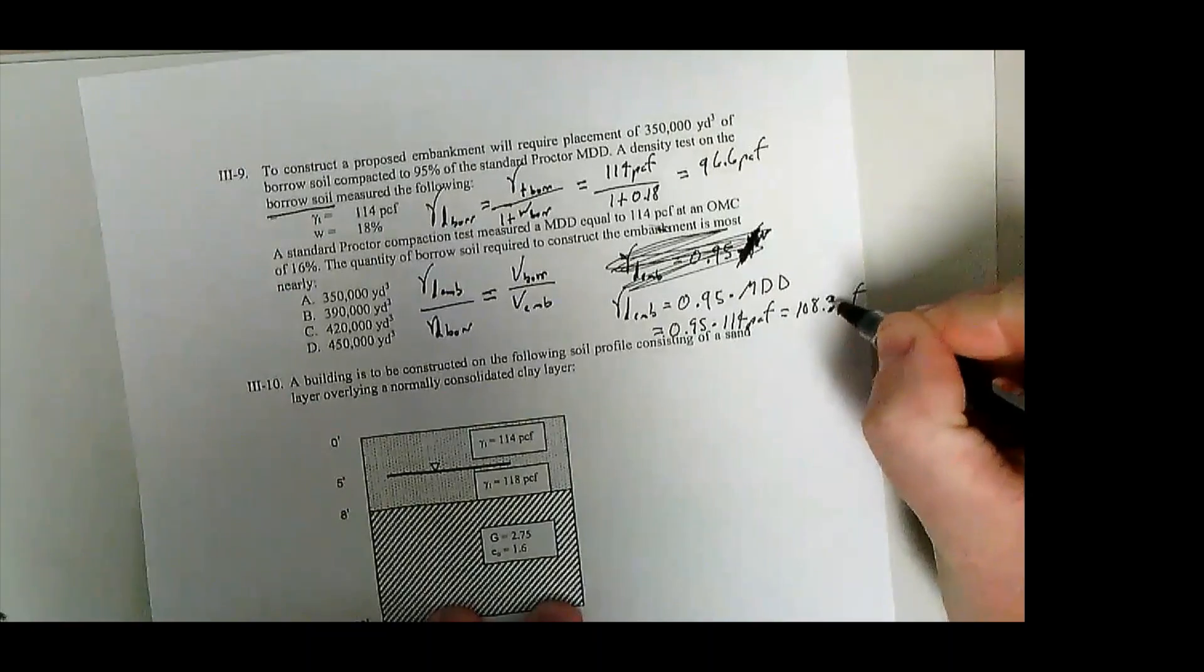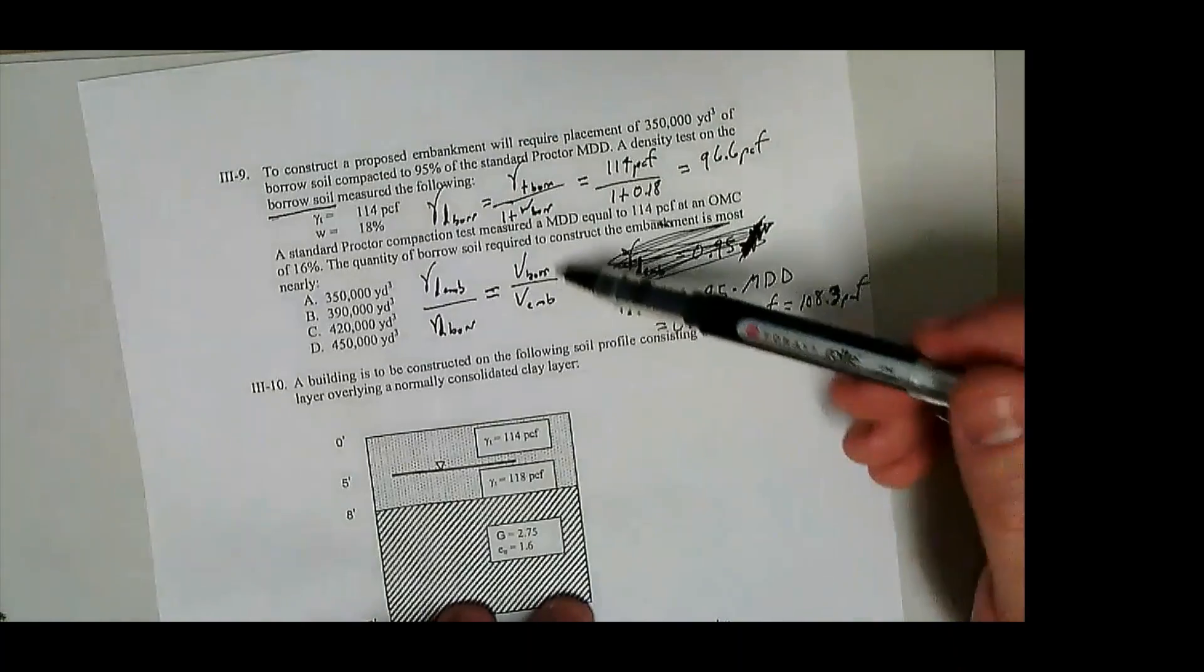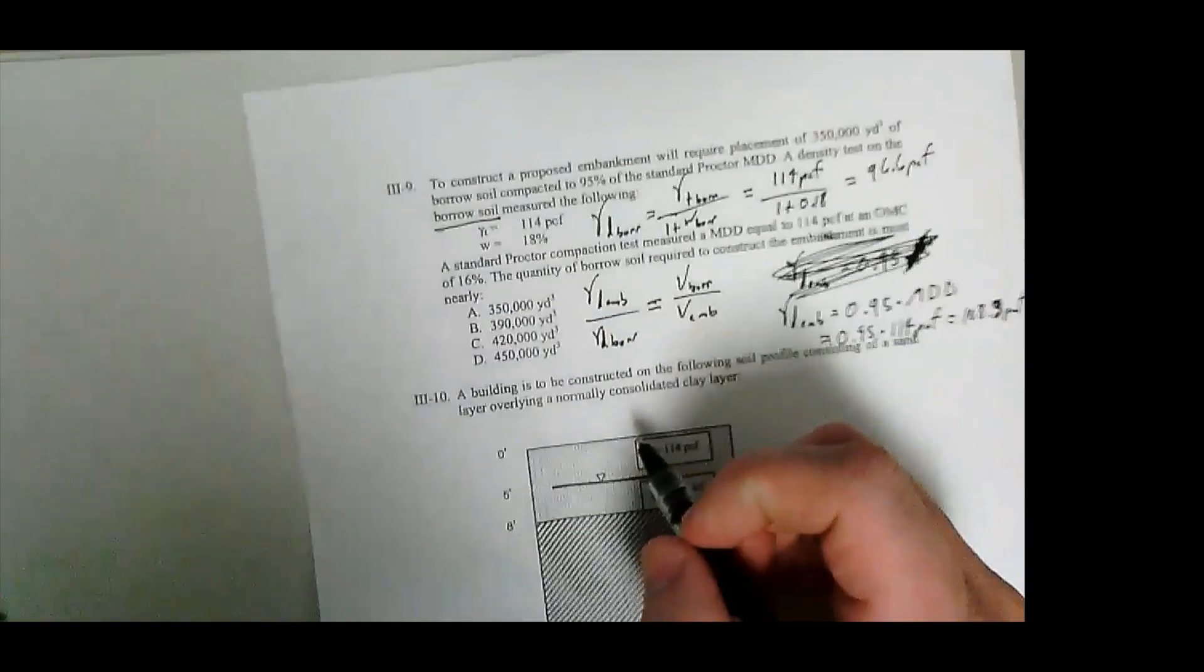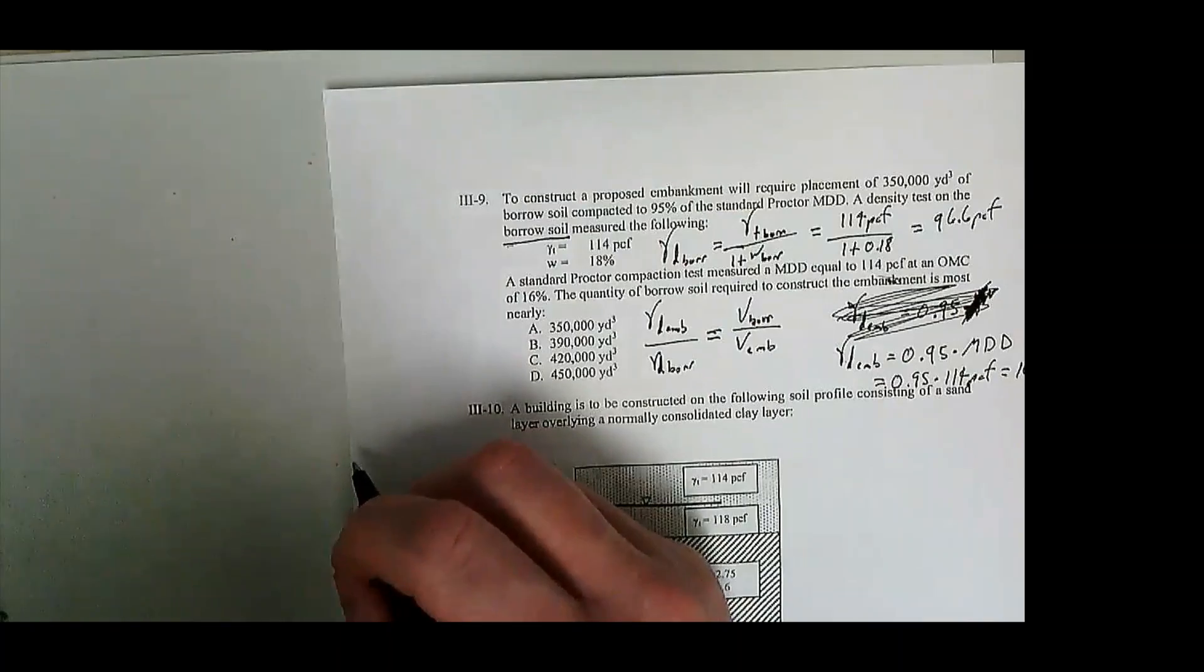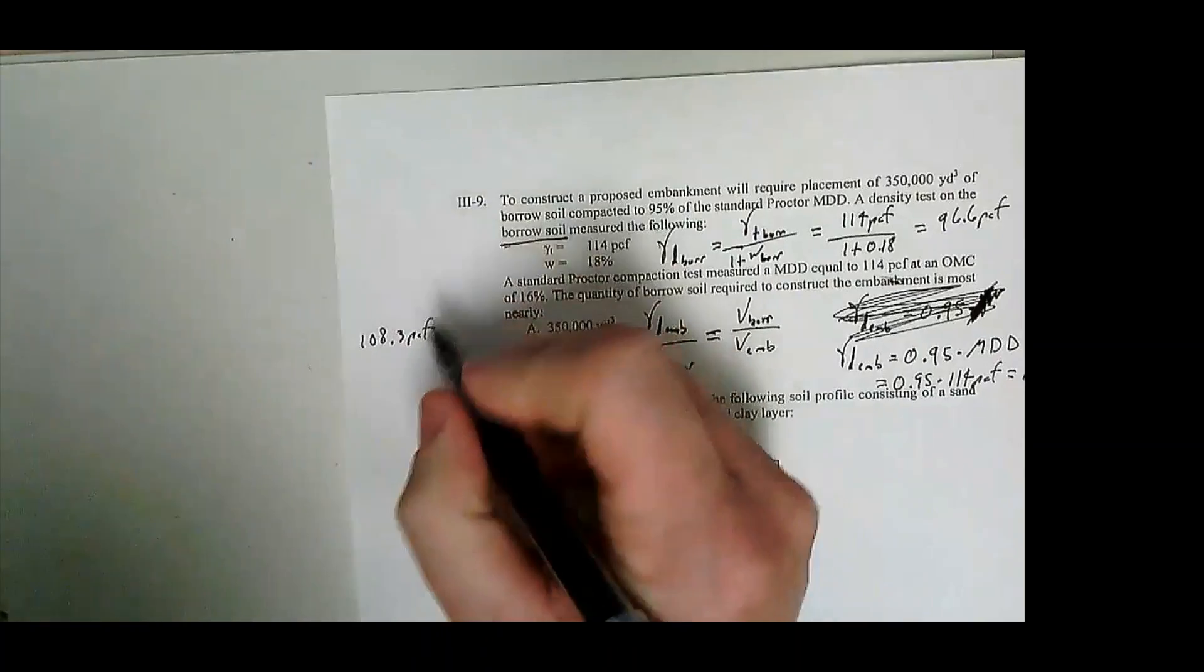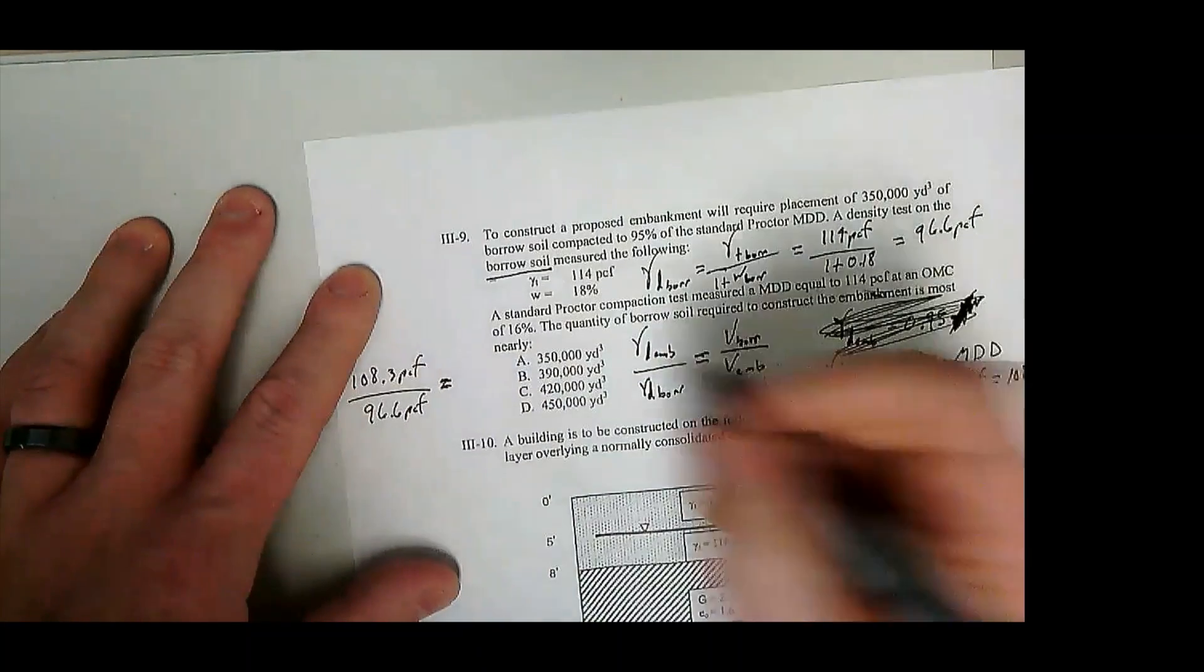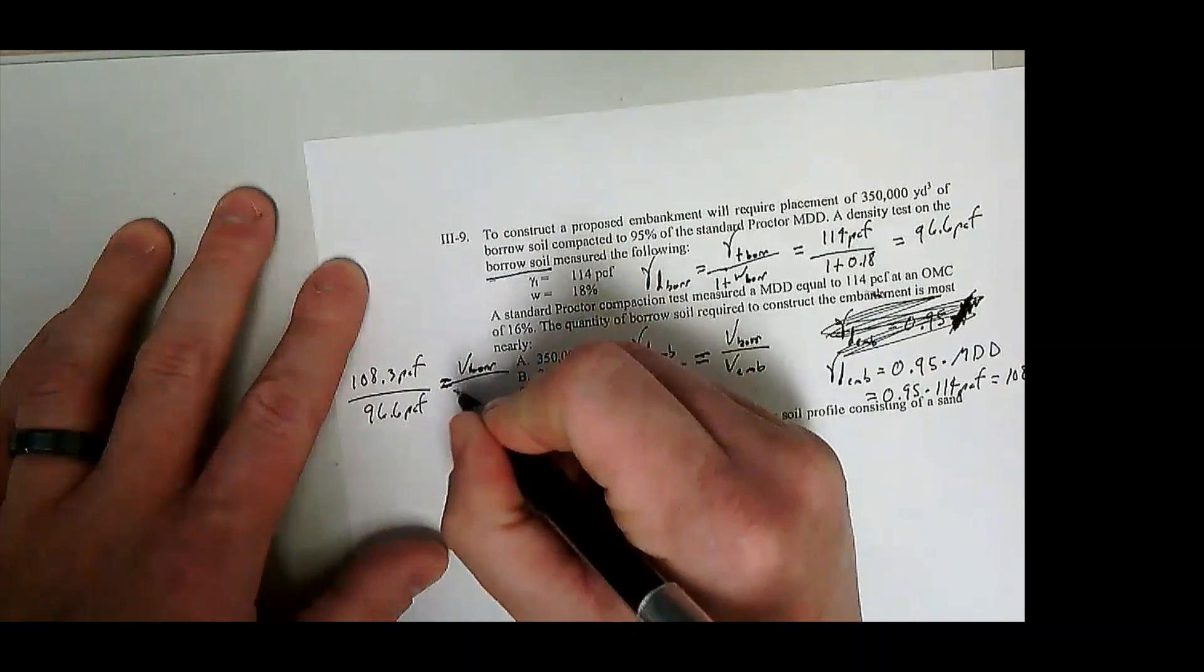So the way to really think about that is the ratio of those densities is equal to the ratio of the volumes. That's what this equation means. So now we've got - I'm going to write back over here, apologize I'm running out of space again from writing too large. So gamma d embankment we calculated is 108.3 PCF divided by gamma d borrow 96.6 PCF which is equal to borrow volume, which is what we're trying to figure out, how much do we need to build a 350,000 cubic yard embankment.